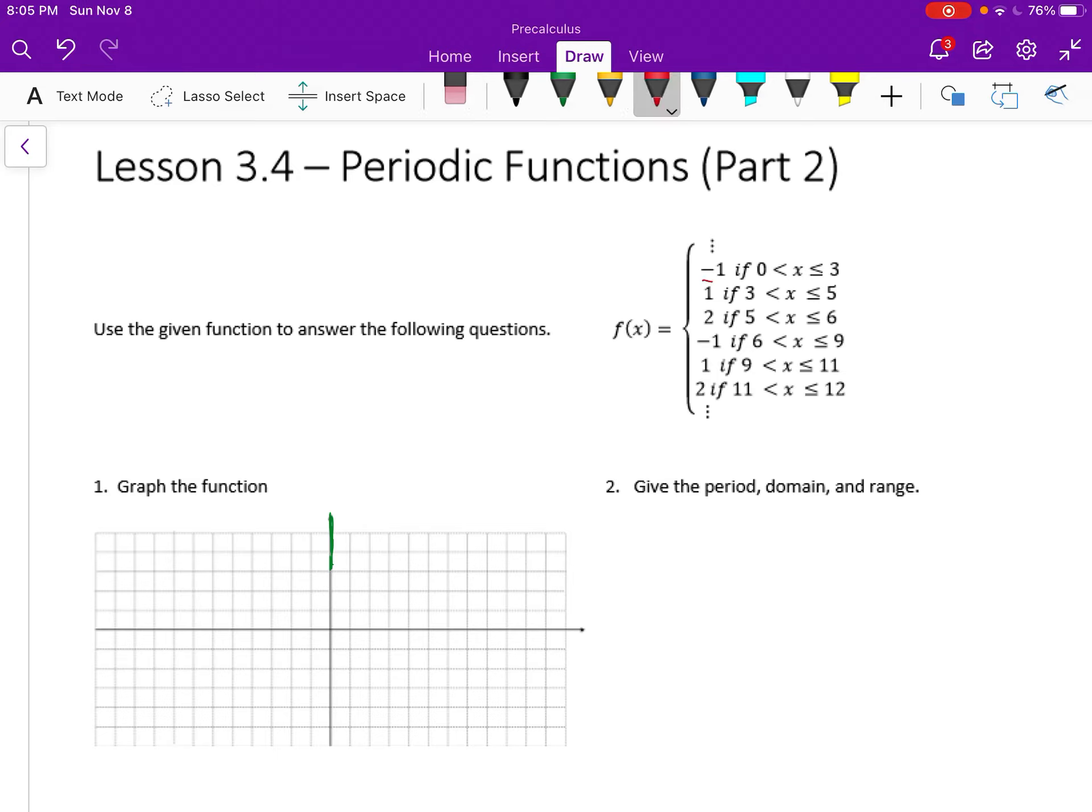We want our function to be y equals negative one between zero and three. So from zero to three, the function should be at negative one. We'll put circles at zero and three, draw a segment, and look at our signs to see if we open or close our circles. At zero it should be open, at three it should be closed.